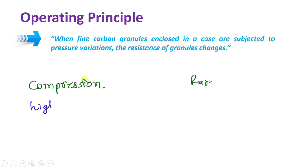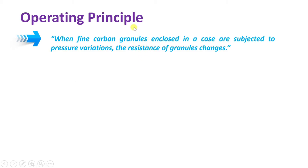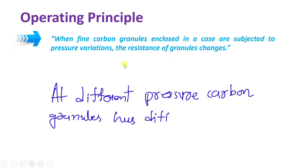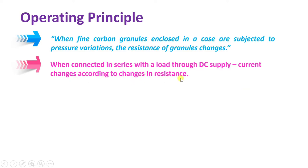During condensation, the carbon granules will be subjected to higher pressure. During rarefaction, the carbon granules will have lower pressure. Due to the pressure applied on carbon granules, the resistance of the carbon granules will change. That change in resistance is utilized to generate an electrical signal. When connected in series with a DC supply, current will change with respect to the change in resistance, and that change in resistance happens based on pressure on the carbon granules.